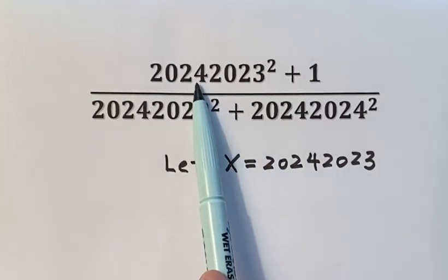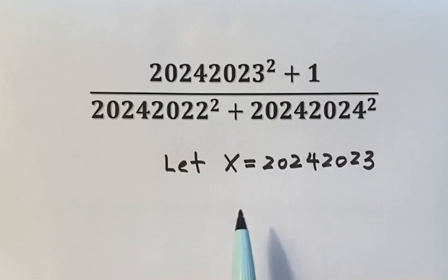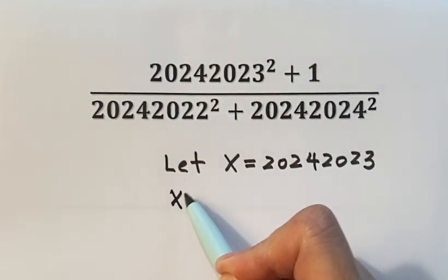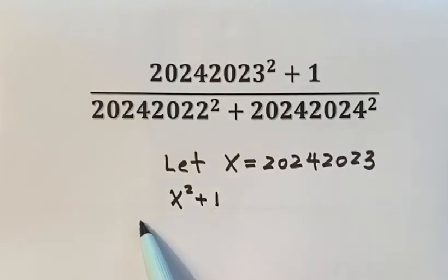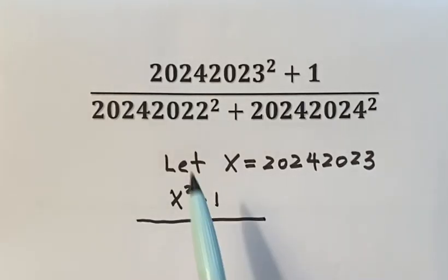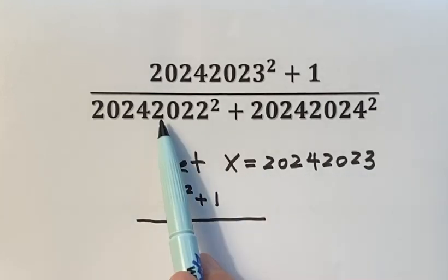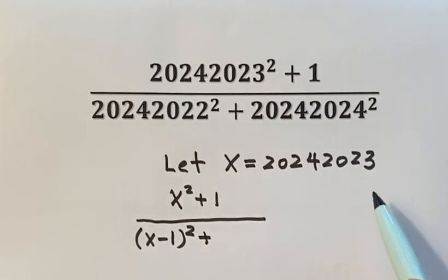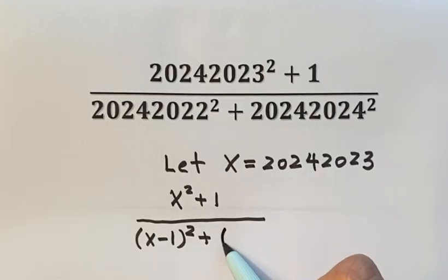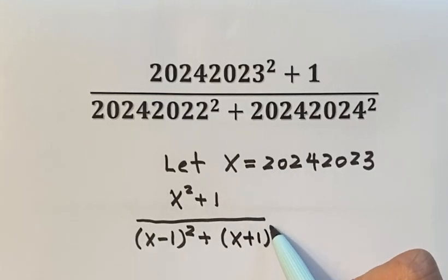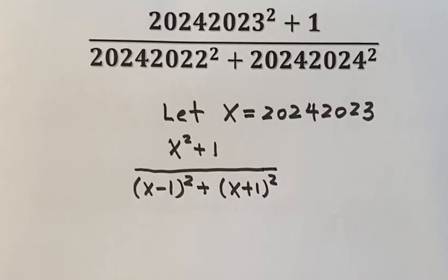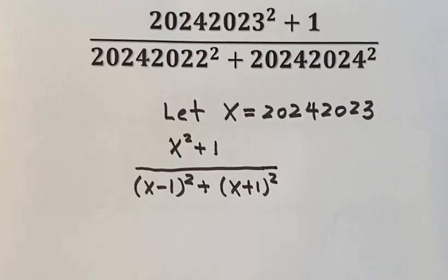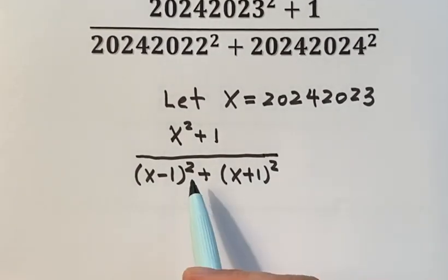So now let's see the numerator. This one will be x squared plus 1. So now we have a fraction just in terms of x. It's much easier to work with. Now let's simplify the fraction.